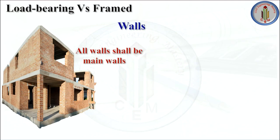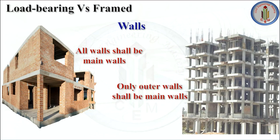In load bearing structure all walls should be main walls — there will not be any partition walls in between, since loads are carried by the walls. Whereas in frame structure only outer walls shall be main walls, and inner walls can be partition walls. Wall thickness from minimum 9 inches must be provided for main walls. In frame structure, outer walls can be 9-inch walls and partition walls can be 4.5-inch thick walls.